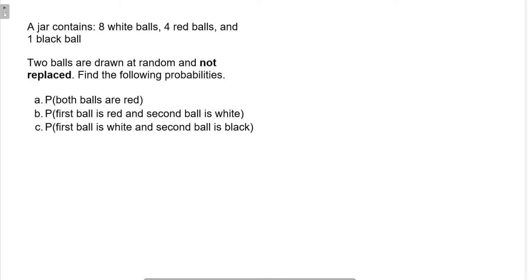They want the probability that both balls are red, so you're going to choose one that's red, you choose the second one, it's red. Then they want the probability that you choose red and then a white. Remember, you didn't put the red back before you chose that white. And then the third one they want is you choose white, you keep that out, and then you choose a black.